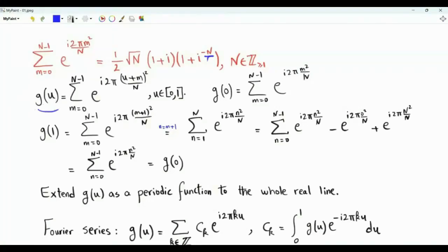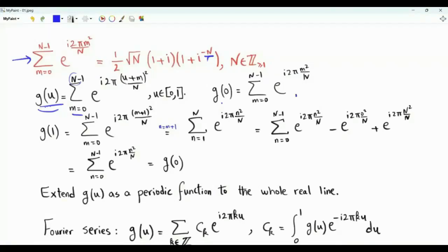We start by defining the function g of u, where u is from 0 to 1. g of u is the summation from m equals 0 to n minus 1 of e to the i pi times u plus m squared divided by n. As we can see, the desired sum is g of u evaluated at u equals 0. g of 0 is the sum we want to evaluate.